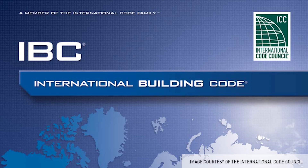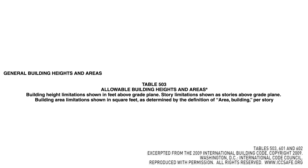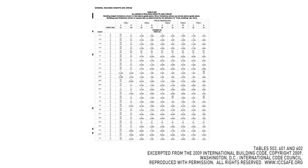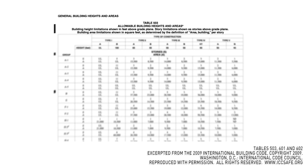The Building Code requires fire resistance ratings for certain types of construction. In the International Building Code, there's a table that provides the basic heights and areas allowed for specific occupancies and specific types of construction — that's Table 503. It gives you the allowable square footage, the baseline allowable square footage, and also the height, number of stories, and how tall you can go.